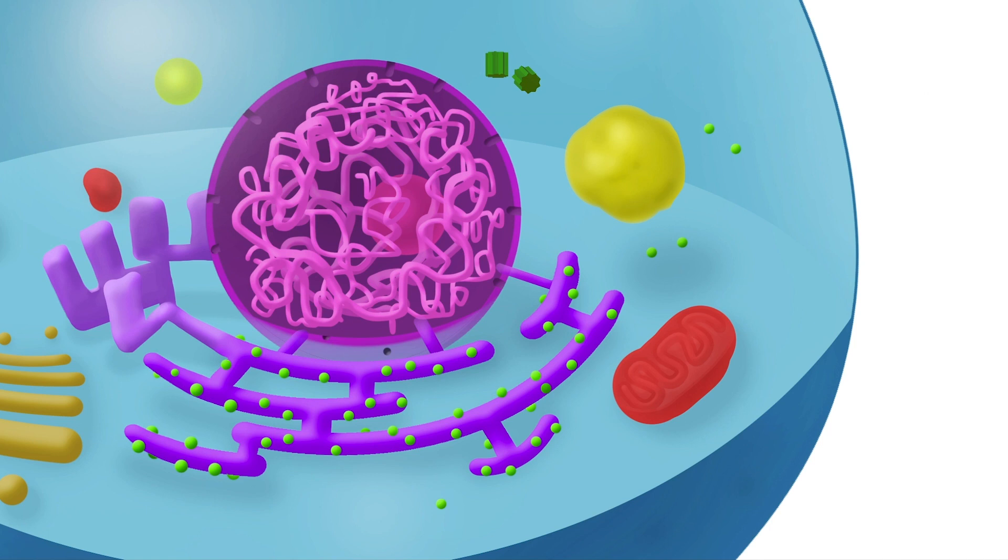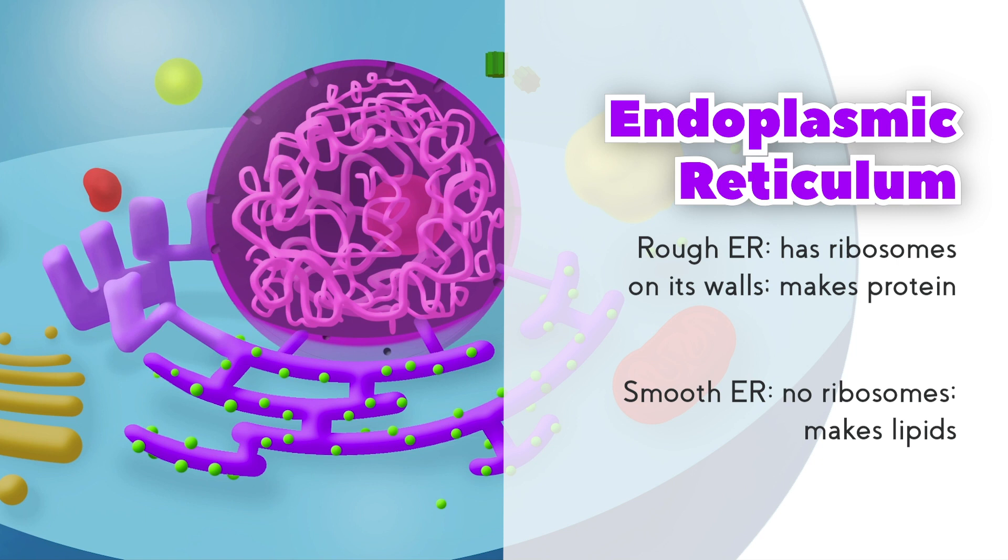This network of tubes and bags connected to the nuclear membrane is called the endoplasmic reticulum. The bumpy part, called the rough endoplasmic reticulum, is responsible for making some proteins. This is because the bumps are actually ribosomes, special cell machines that make proteins.